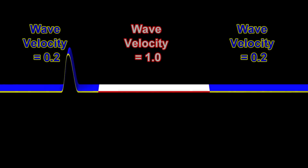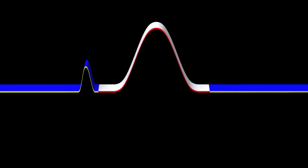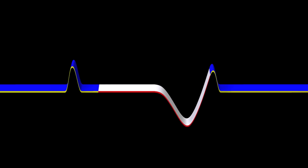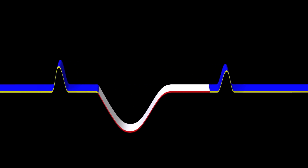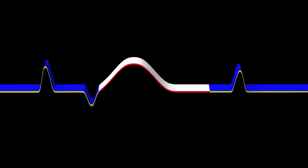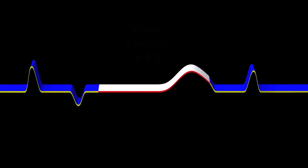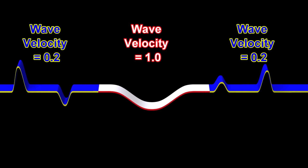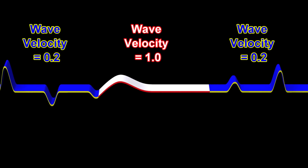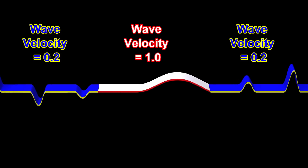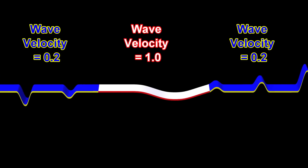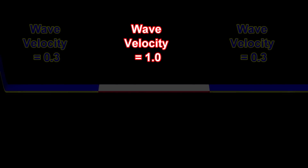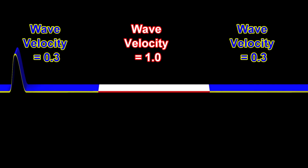Can you predict how the results will be different this time? In each of the following scenarios, the velocity inside the middle material will continue to be equal to one, but we will keep increasing the wave velocity inside the blue material.